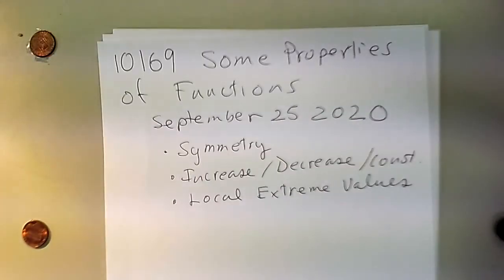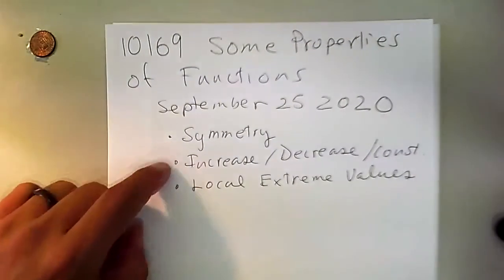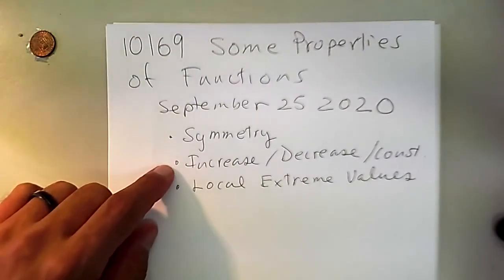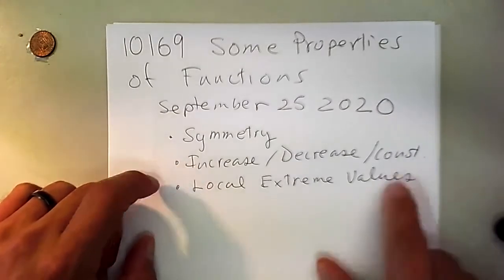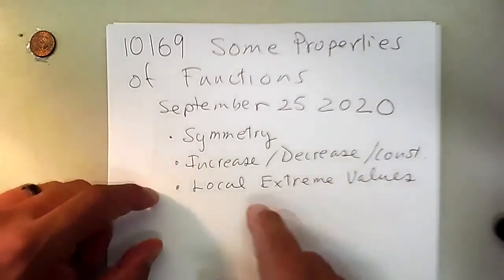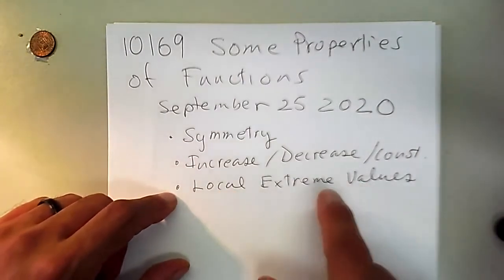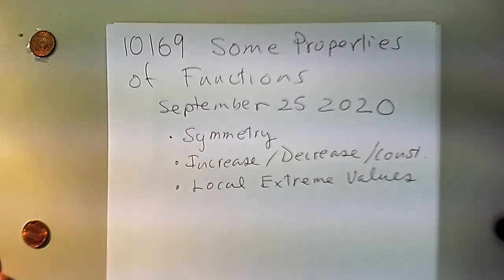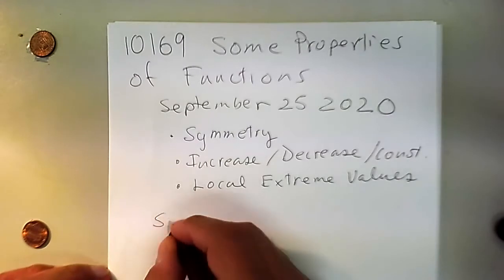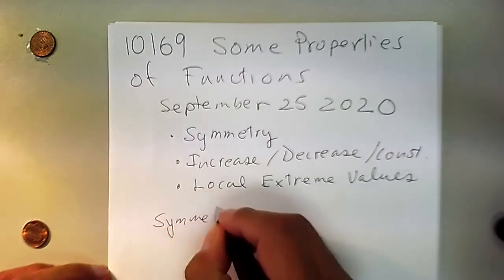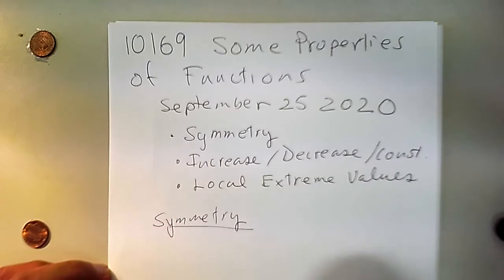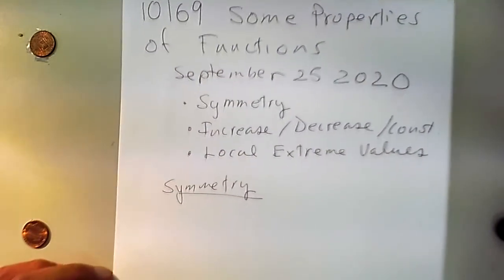Let's talk about some properties of functions. First, symmetry. Then we're going to talk about increase and decrease and constant as parts of the function, as well as the local extreme values — that means local maximums and minimums. We're going to focus on two kinds of symmetry: symmetry across the y-axis and symmetry across the origin.